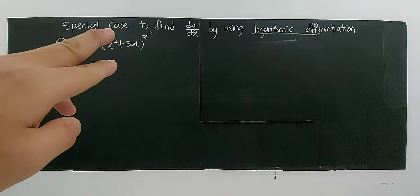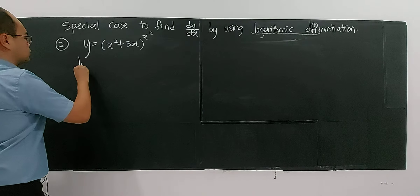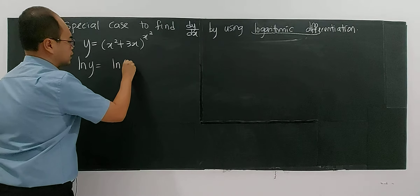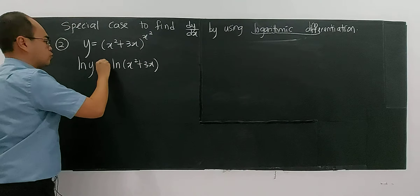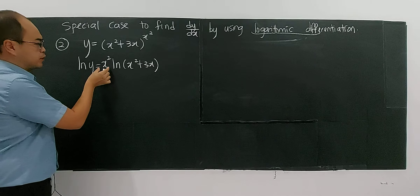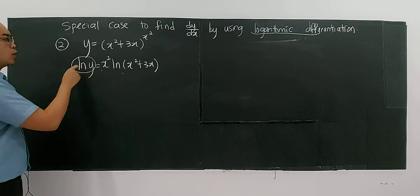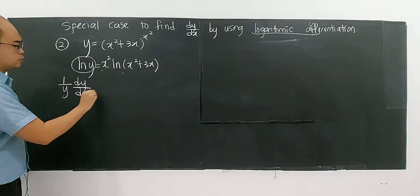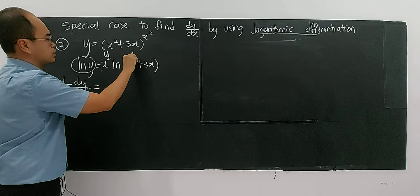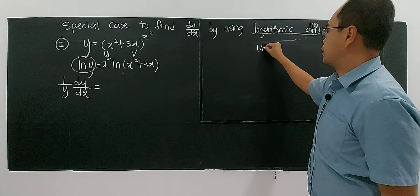Rearranging, I have (1/y)(dy/dx) equal to x·(1/x) plus ln x, which simplifies to 1 plus ln x. And finally, dy/dx equals y multiplied by (1 + ln x). You can replace y — since y is x^x — so dy/dx equals x^x multiplied by (1 + ln x). This is your answer for this problem.